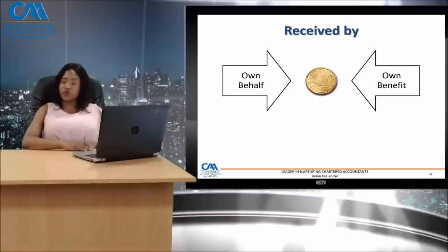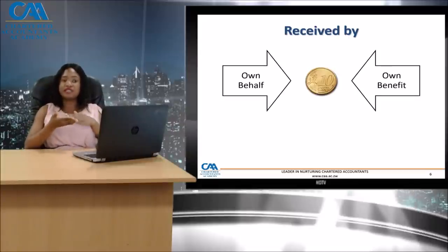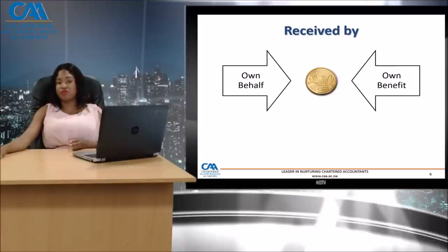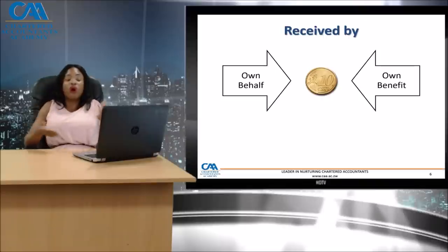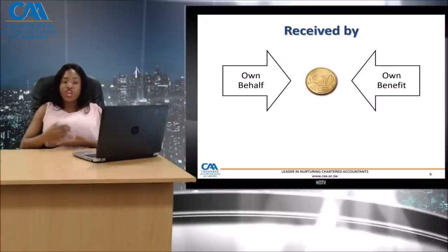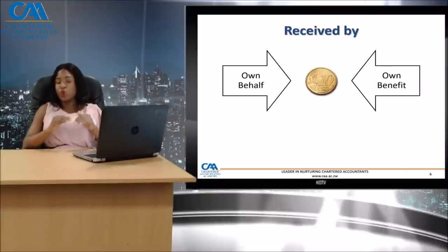If agents have trust accounts where deposits are kept separate from other monies, those amounts will not be received for their own benefit because they are not using them. But if the deposits are mixed with all other funds in one account, there is a high probability the money will be used for their own benefit, meaning they have received it. You'll see examples in your module that will help you understand the concept of 'received by' better. The main case law here is the Gildenheist case.